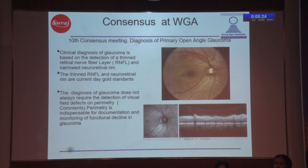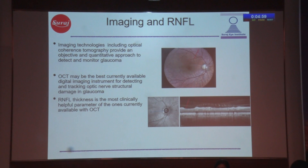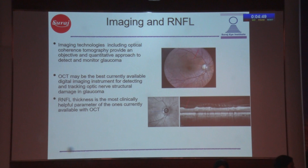The diagnosis of glaucoma does not always require the detection of visual field defects — that's what we were discussing with regard to preperimetric glaucoma. But perimetry is indispensable for documentation and monitoring of functional decline in glaucoma. You can see here a retinal nerve fiber layer defect that correlates with the retinal nerve fiber layer. OCT provides an objective and quantitative approach to detect structural damage, and it has stood the test of time as the best currently available digital imaging instrument for glaucoma specialists. RNFL thickness is the most clinically helpful parameter currently available with OCT.